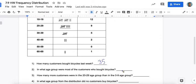Question two: what age group were most of the customers who bought bicycles? You're looking for the highest frequency, which was 10 to 19.